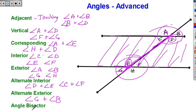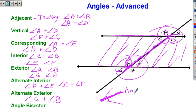The last one is an angle bisector. If I take an angle and draw a line right in the middle, splitting this angle into two equal angles, this line that comes in the middle is called an angle bisector. An angle bisector cuts a bigger angle into two equal angles.